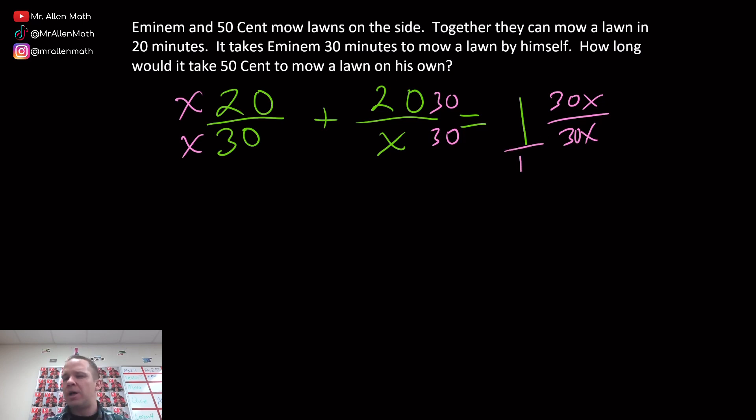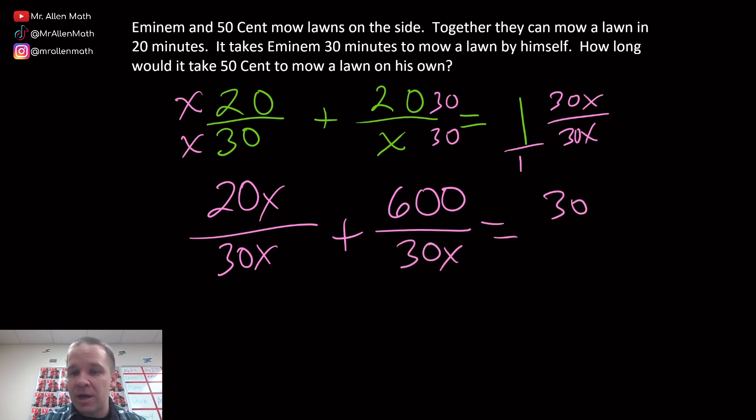Remember, this is like one divided by one, so you can represent that as a fraction. So now I have 20X over 30X plus, we got 20 times 30, that is 600 over 30X equals 30X over 30X. Beautiful, fantastic. Do I have all common denominators? Yes, I do. So now I can just work with my numerators.